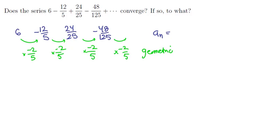The nth term is going to be the starting value 6 times the multiplier negative two-fifths to the nth power. So now we have a formula for the nth term.